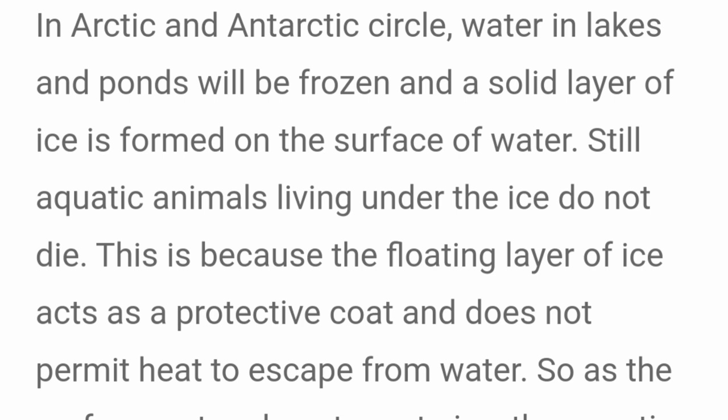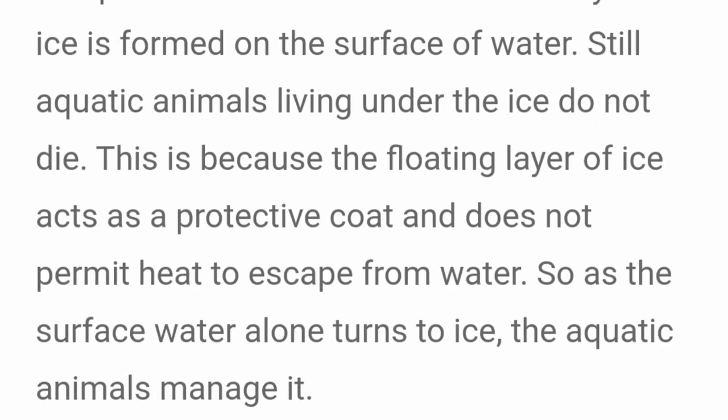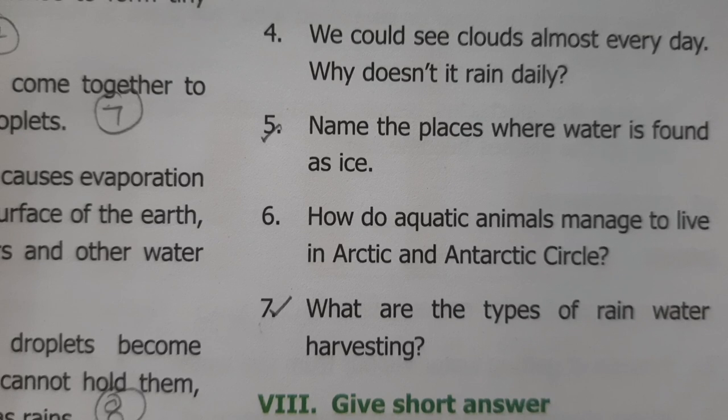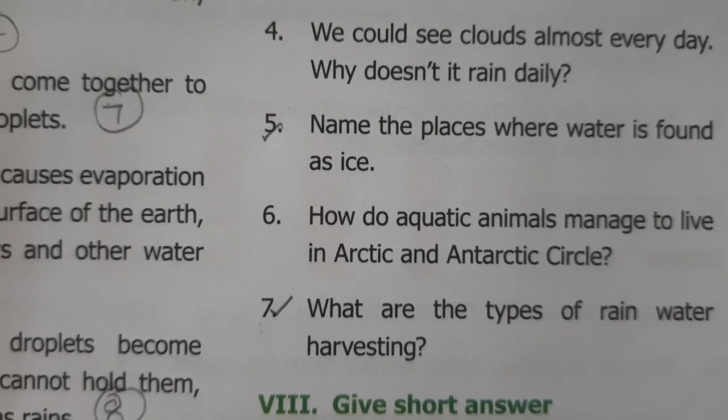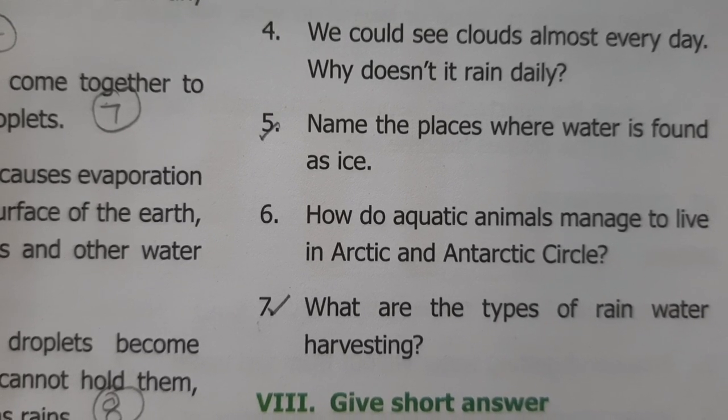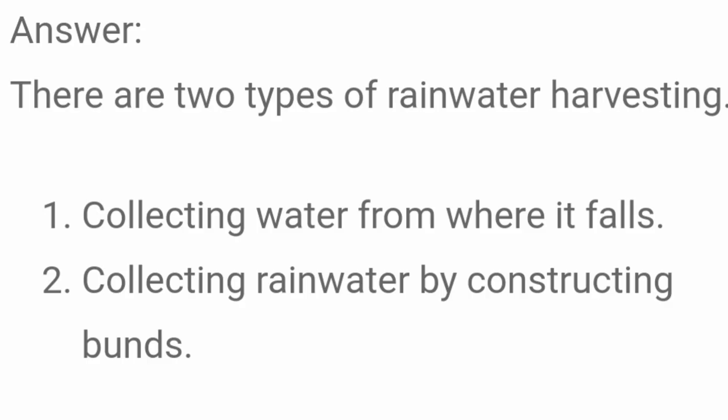Aquatic animals living under the ice do not die because the floating layer of ice acts as a protective coat and does not permit heat to escape from water. So, as the surface water alone turns to ice, the aquatic animals manage to survive.